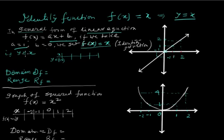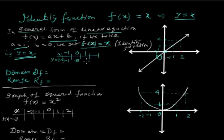Since y and x have the same value: if x = -1, y = -1; if x = 0, y = 0; if x = 1, y = 1; if x = 2, y = 2. Plotting these points and joining them, we get a straight line through the origin.